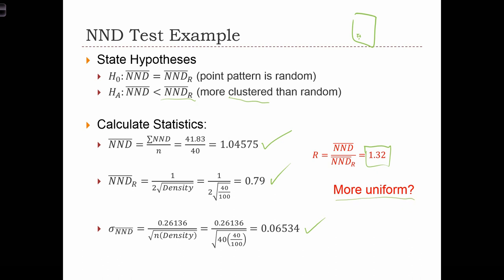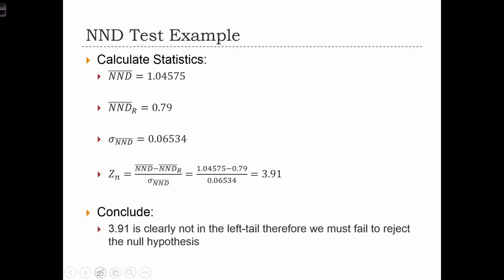So already we see there's something fishy going on. So let's do a test, and we can use the z-score. So we just calculate the z-score, and we find that the z-score is equal to 3.91.